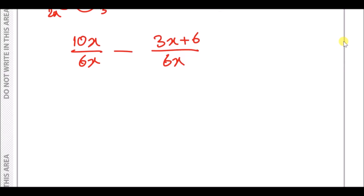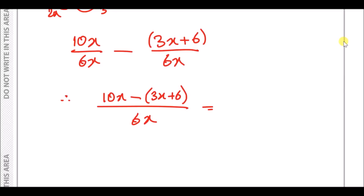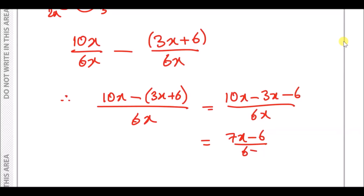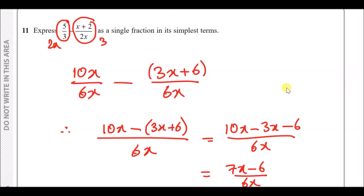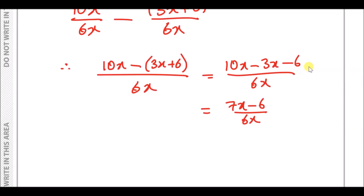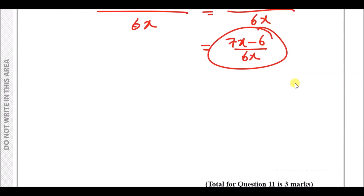After making denominators equal: the left numerator becomes 10x and the right numerator becomes 3(x + 2) = 3x + 6, all over 6x. Put brackets around the subtracted numerator: 10x − (3x + 6) = 10x − 3x − 6 = 7x − 6. The final simplified answer is (7x − 6) / 6x.